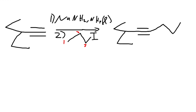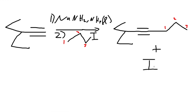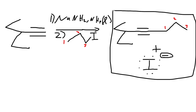So now we have something like this. We have one, two, and three carbons, plus the iodine that we have. Again, it's not really important to add the iodine to our product because we're just doing the products, but for the mechanism it will be important.